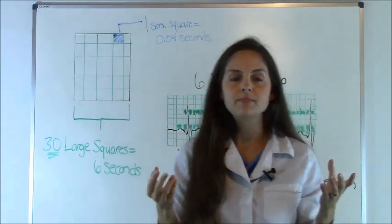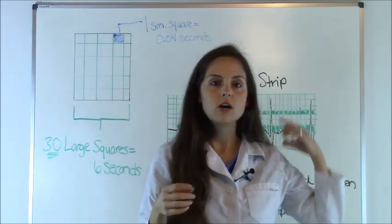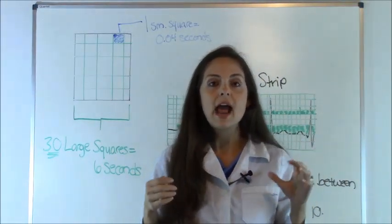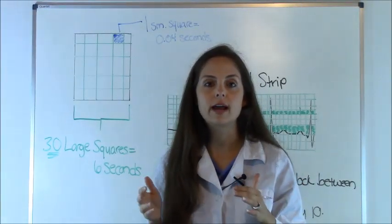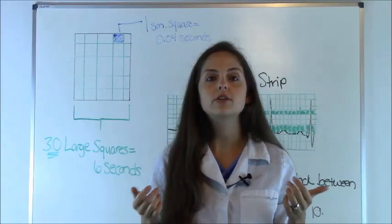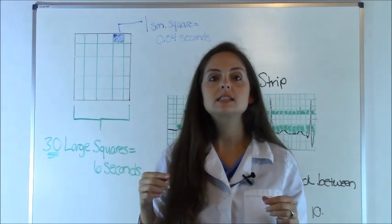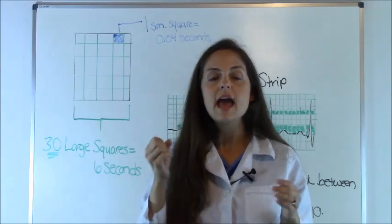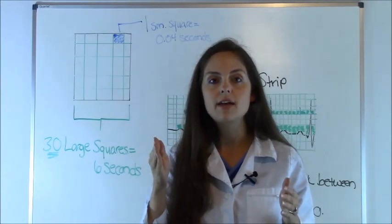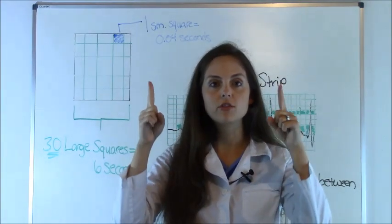So what you're doing is you're looking at your strip, which I'll do an example behind me, and you're going to count either your atrial rate or your ventricular rate. If you're counting for your atrial rate, you're going to be looking at the P waves because the P waves are where your atriums contract. And you would count every P wave in between 30 of the large squares.